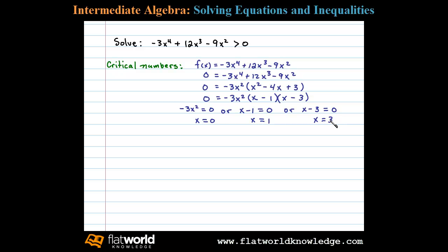And so the three critical numbers are 0, 1, and 3. Next, let's construct a sign chart. Because we were given a strict inequality, we'll use an open dot at our critical numbers: 0, 1, and 3.